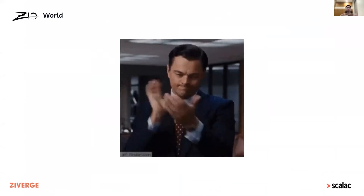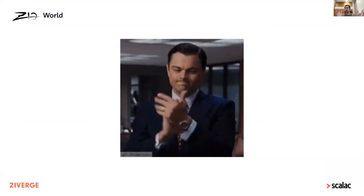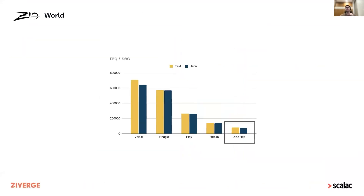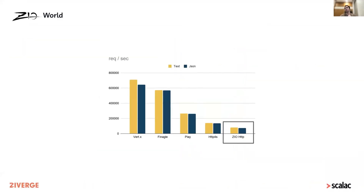ZeroHTTP fared really well in production, even under high stress — there were zero outages throughout the season. However, we really sucked at performance; we were worse than HTTP4S. This wasn't surprising, considering we were all accustomed to functional frameworks and functional programming being slow. So once the season was over, we thought we'd invest time to make ZeroHTTP at least as fast as HTTP4S. That was our goal for the next season, April 2021.